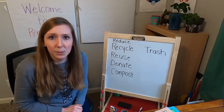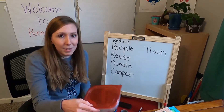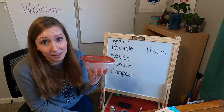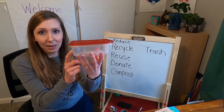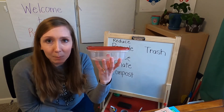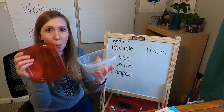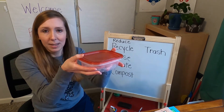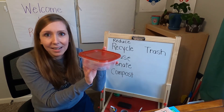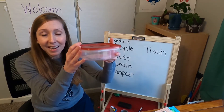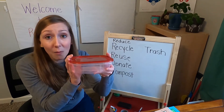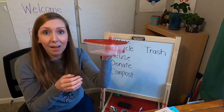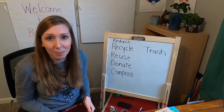I want to show you something else that I reuse at my house. Whenever Mr. Stobbs and I go to the grocery store, we sometimes get ham or turkey for sandwiches and it comes in a little container like this. Whenever we're done with the ham and turkey, we wash out this container and reuse it — we put other leftovers in it, like pasta or carrots. So we're reusing this over and over and over again, always washing it out and putting other things in. That's a great way to reuse something at your house.